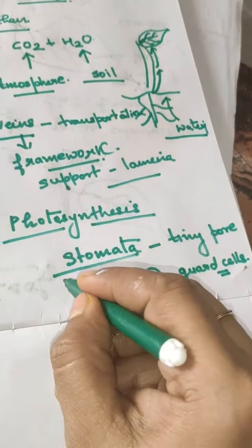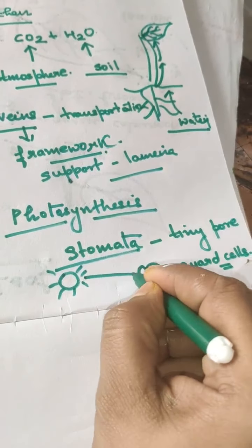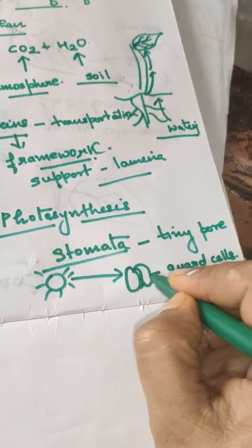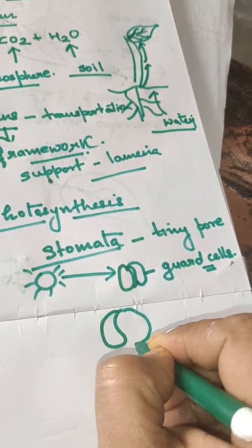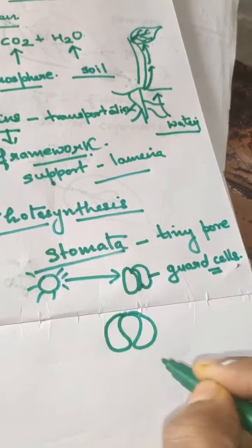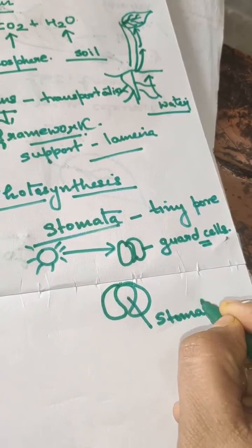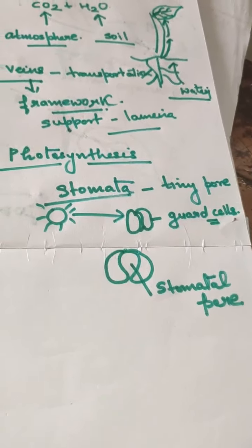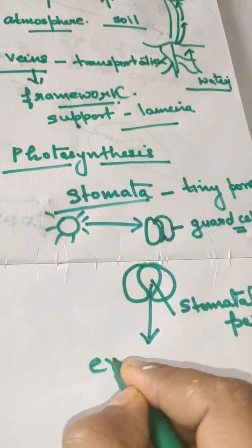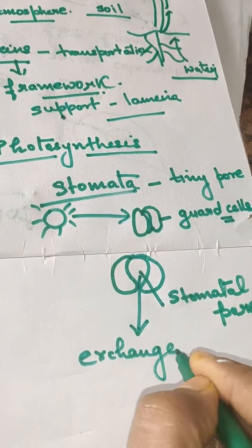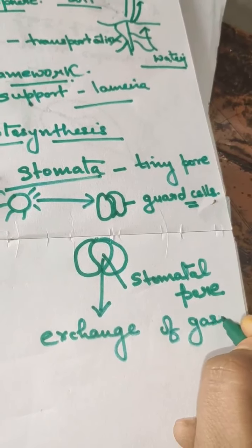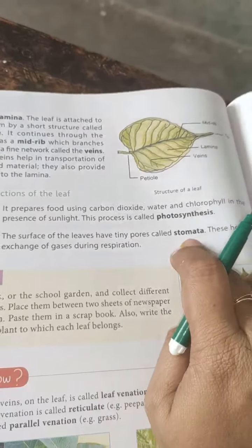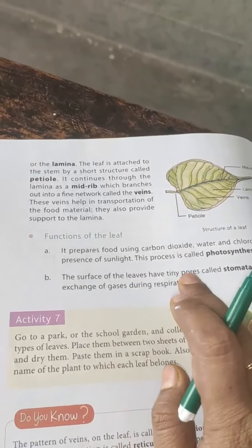When sunlight falls on the leaves, the chlorophyll captures the sunlight and opens the guard cells. When the guard cells open, there is a gap between the two guard cells known as the stomatal pore, and through this pore, exchange of gases takes place. The surface of the leaves has tiny pores called stomata which help in exchange of gases during respiration.